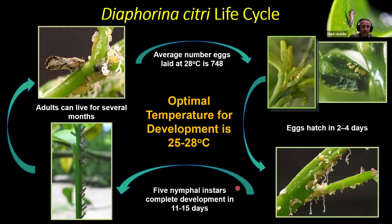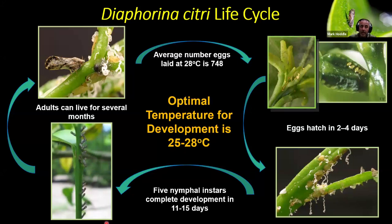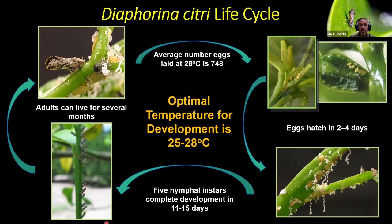The nymphs will go through their five developmental stages, then upon molting from the last instar, the adult will have its wings and can fly from plant to plant. The nymphs can acquire the bacterium that causes Huanglongbing by feeding on an infected plant, and adults that develop from those nymphs tend to be much more efficient at vectoring the bacterium from plant to plant. If an adult acquires the bacterium in the adult stage, it's not as efficient at spreading the bacterium from plant to plant.